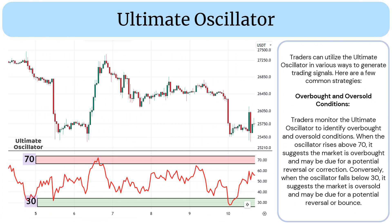Here are a few common strategies. Traders monitor the ultimate oscillator to identify overbought and oversold conditions. When the oscillator rises above 70, it suggests the market is overbought and may be due for a potential reversal or correction. Conversely, when the oscillator falls below 30, it suggests the market is oversold and may be due for a potential reversal or bounce.